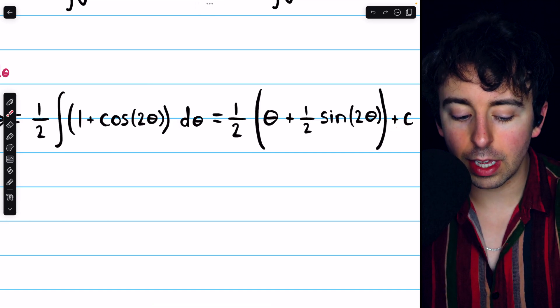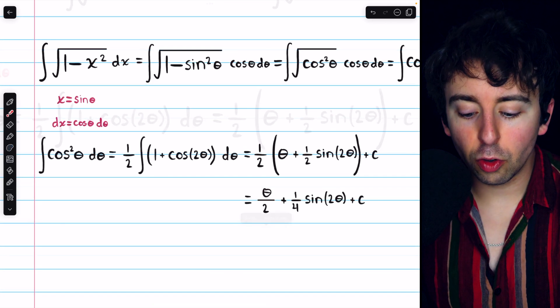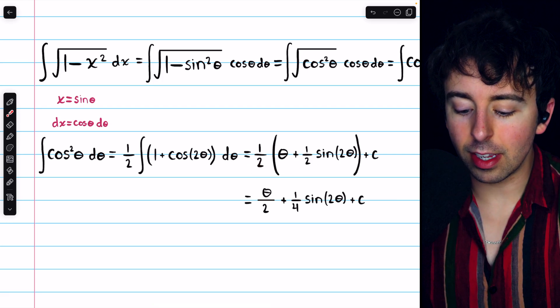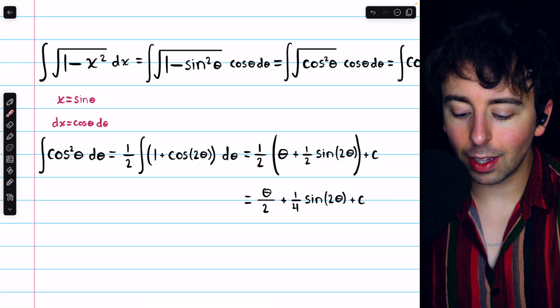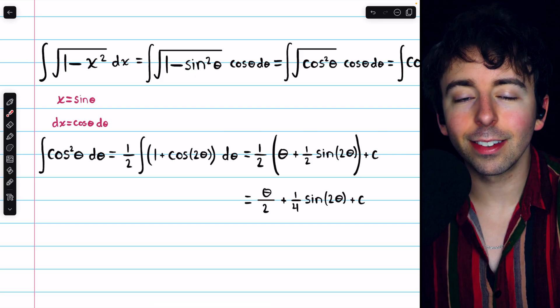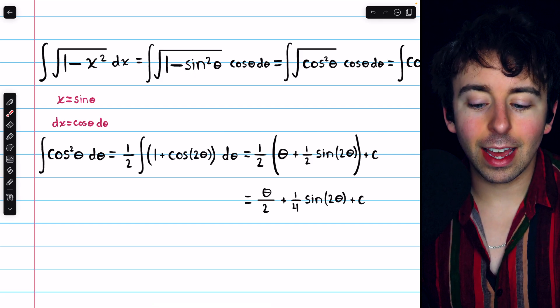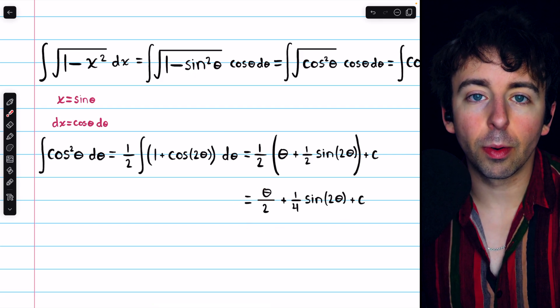Of course, we also have the addition of the arbitrary constant. Then, distributing the 1 half, this is equal to theta over 2 plus a fourth sine 2 theta plus c. All that remains, then, is to rewrite this in terms of x.